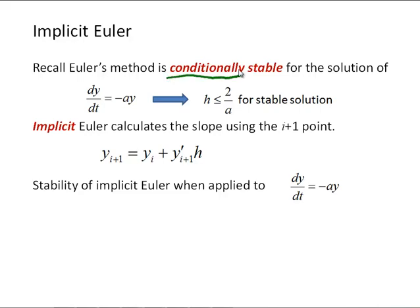So recall Euler's method is conditionally stable for the solution of the differential equation dy/dt equals negative a times y, and what that meant for conditional stability was that as long as h, our time step, was less than or equal to 2 over a, we got a stable solution. Implicit Euler calculates the slope using the i plus 1 point instead of the ith point. So let's look at applying Euler's method to that same differential equation using implicit Euler's method. If we do that we get y i plus 1 equals y i plus negative a times y i plus 1 times h.